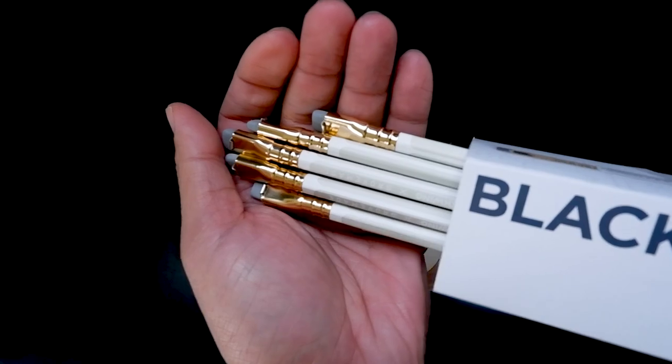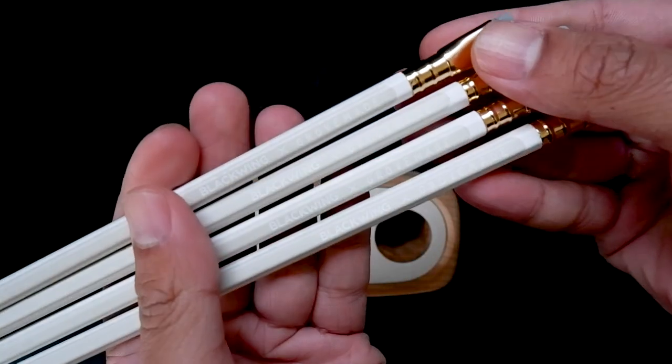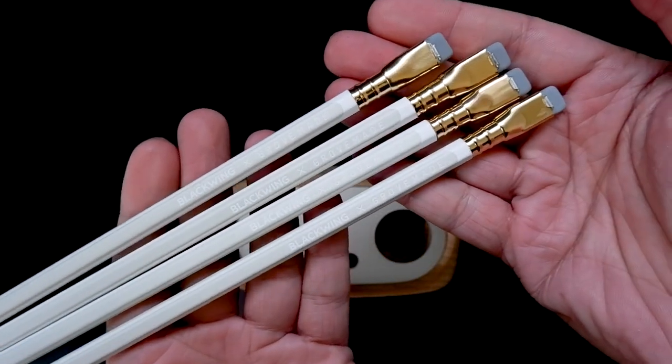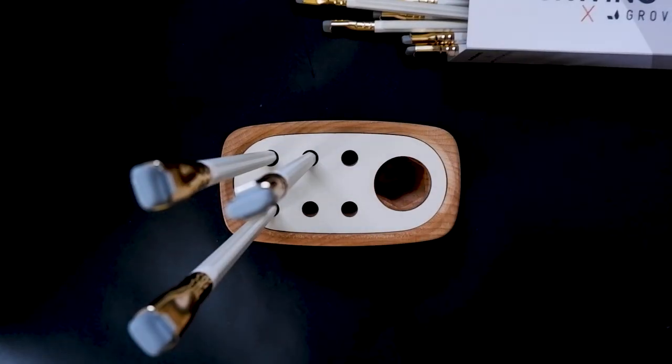Each kit comes with these 12 special edition Blackwing and Grovemade pencils that contain our balanced graphite. The caddy can display up to six pencils at a time.